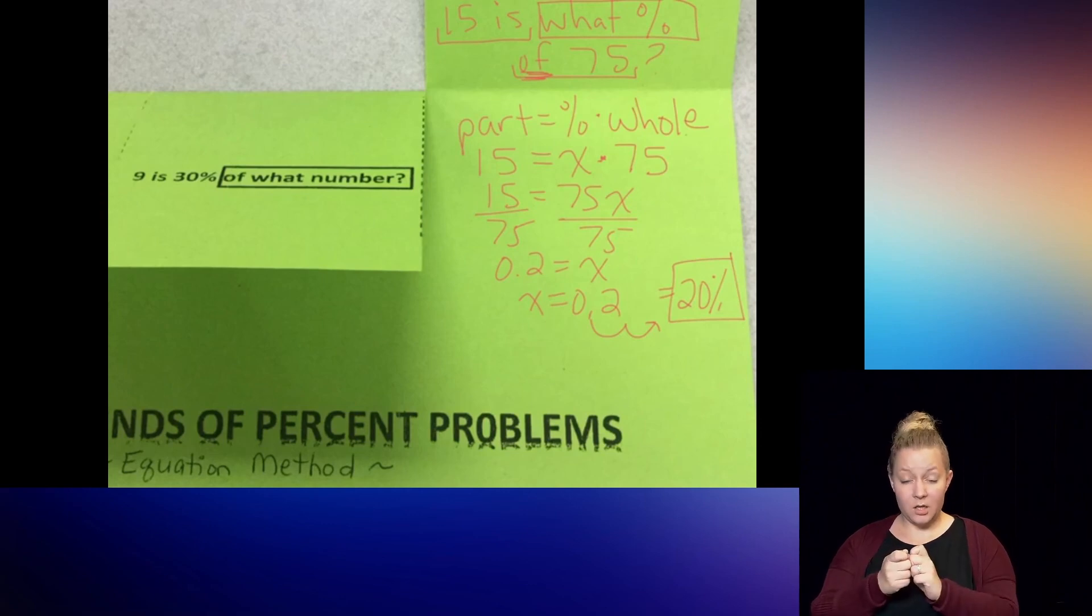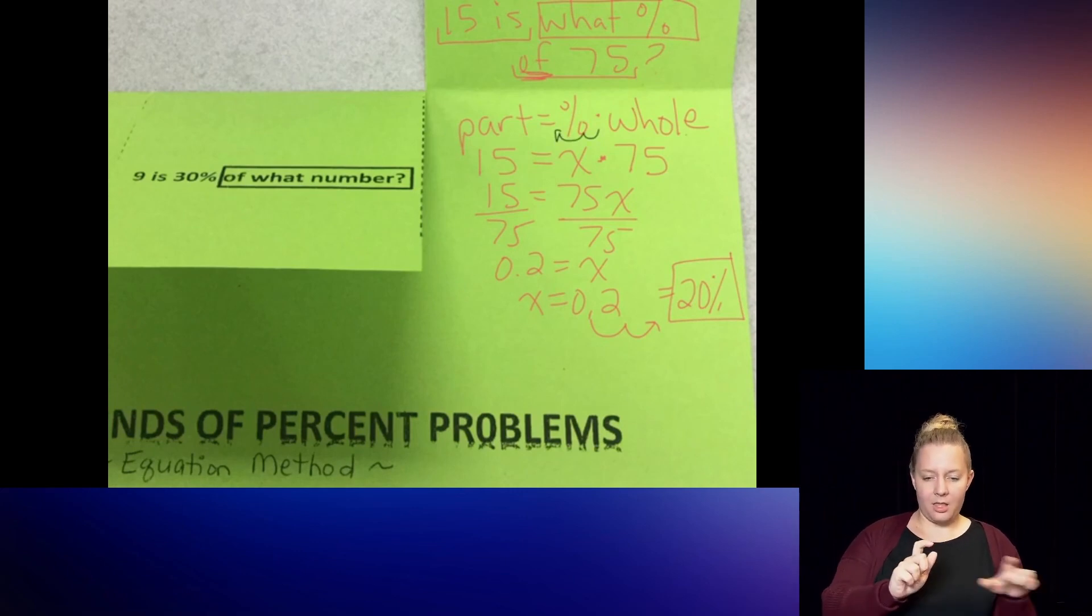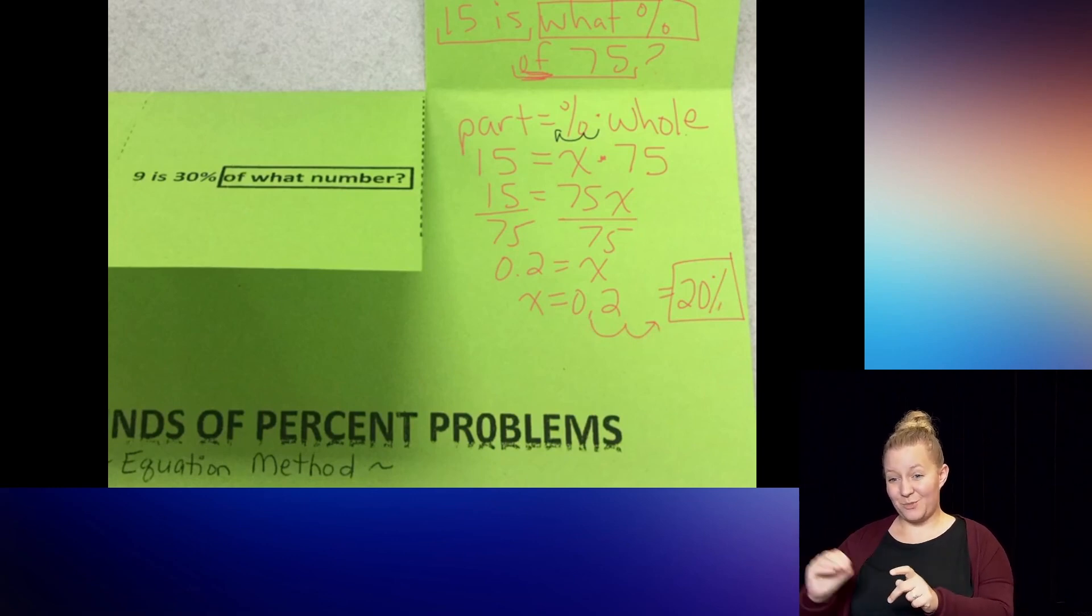In the proportion method, you put that over 100, which means you're telling me it's already a percent. It's already out of 100. So once you solved it, you didn't have to change anything. In the equation method, equations don't really use percents. Equations use that decimal form of the percent. Remember, we would have taken the percent and moved it left twice. So now when we solve it out and we get that decimal number, we're having to move it to the right twice again to get it back to what that percent number would have been.